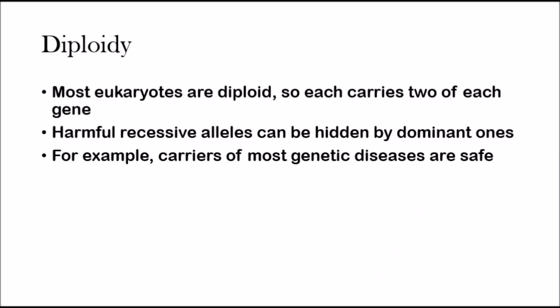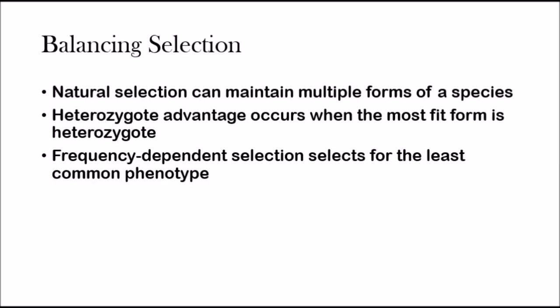How does diploidy prevent natural selection from reducing variation? Natural selection can keep occurring, but because organisms carry two different alleles and two different sets of chromosomes — two different sets of blueprints — if natural selection wipes out one allele, another can present itself, and therefore genetic variation is maintained.